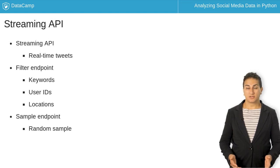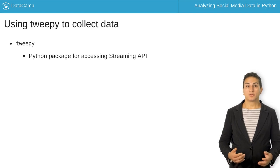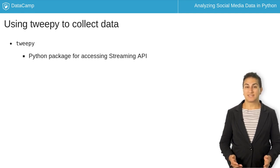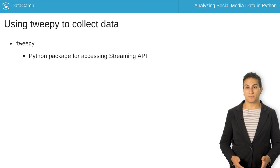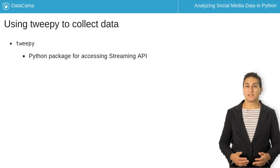To collect data from the Streaming API, we're going to use a package called TwiPi. TwiPi abstracts away much of the work we need to set up a stable Twitter Streaming API connection. When you do this in practice, you're going to have to set up your own Twitter account and API keys for authentication. For now, we'll simulate having API keys with us.